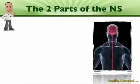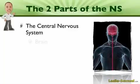There are two main parts of the nervous system. First, we have the central nervous system, which is made up of the brain and the spinal cord.